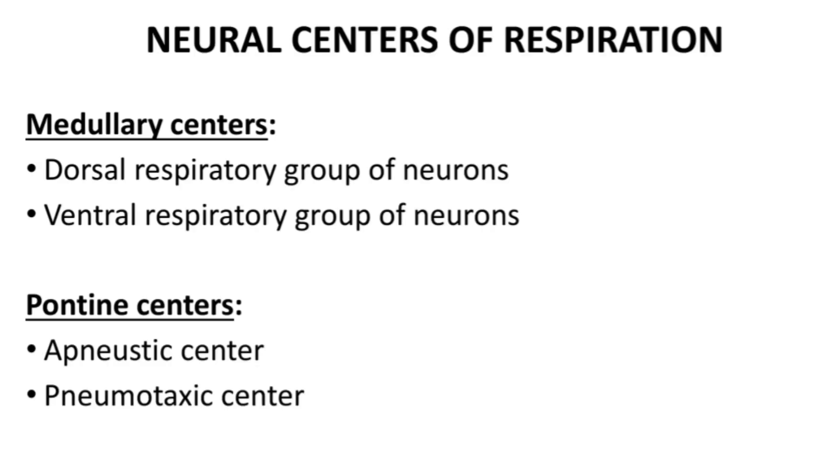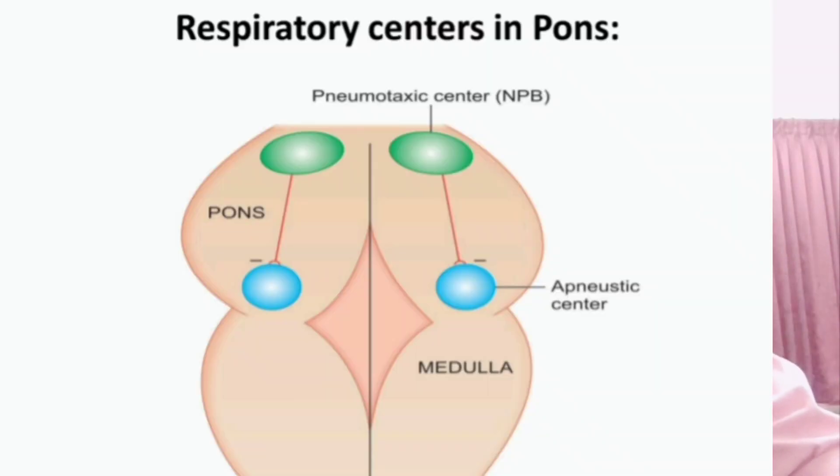For neural regulation of respiration, we have the pons and medulla. In the pons, there are two groups of neurons. The upper pons contains the pneumotaxic center, and the lower pons contains the apneustic center. The medulla has three groups of neurons.